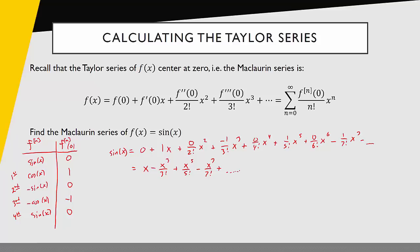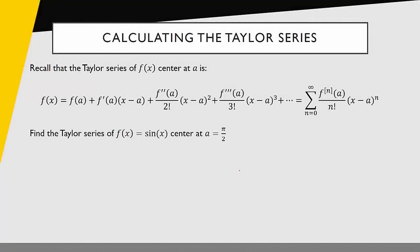Now, how do we apply the formula when we're not centered at zero? Let's take a look at that. Here's the formula for the Taylor series of functions centered at a. We're going to use that to find the Taylor series of sine of x centered at a equals π/2. So once again, I'm going to build my table.